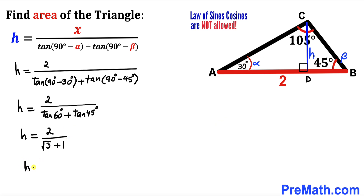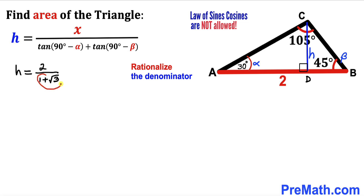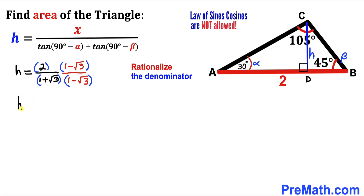We can rewrite the denominator as 1 plus √3. Now we rationalize by multiplying numerator and denominator by the conjugate (1 − √3). This gives h equals 2 times (1 − √3) divided by (1 + √3)(1 − √3).